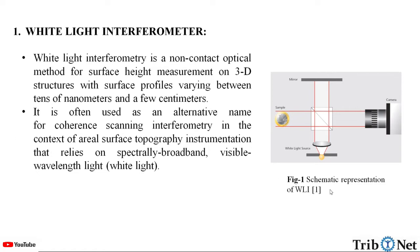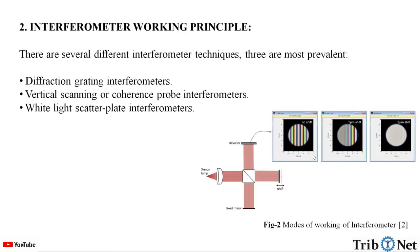Here we can see the schematic representation of the White Light Interferometer. There are several different interferometer techniques, and three are most prevalent: diffraction grating interferometers, vertical scanning or coherence probe interferometers, and white light scatter plate interferometers. Here in this figure, we can see the modes of working of the interferometer.